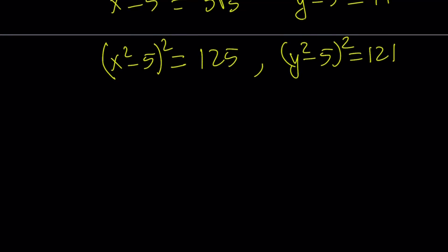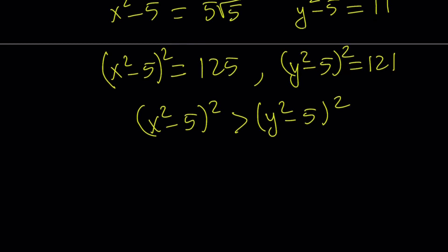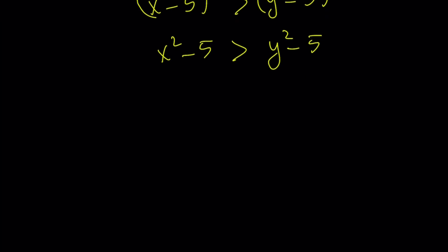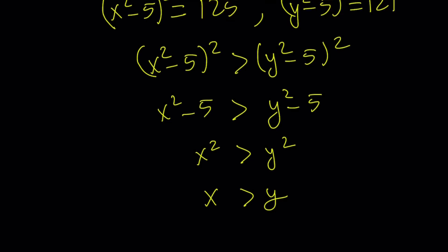And now, I can compare them. Obviously, x squared minus 5 quantity squared is greater than y squared minus 5 quantity squared. Now, I can square root both sides because notice that everything is positive and we can backtrace everything here. So, x squared minus 5 is going to be greater than y squared minus 5. And then from here, x squared is going to be greater than y squared. Since x and y are both positive, x is going to be greater than y.